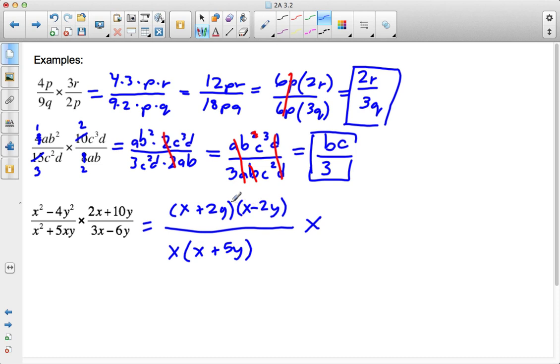That's my first fraction. Now my second fraction, 2x+10y, I can factor out a common factor of 2, and I'm left with 2(x+5y). And I factor out the denominator. I'm taking a look. I see a common factor of 3, and I'm left with 3(x-2y).